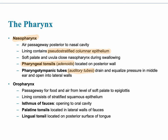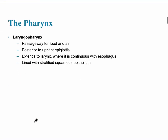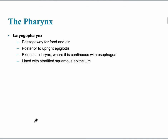The next region of the pharynx is called the oropharynx. In this region, we find a couple of tonsils. The palatine tonsils are located in the lateral walls, and the lingual tonsils are on the posterior surface of the tongue. The word 'lingual' sounds like language — tongue.